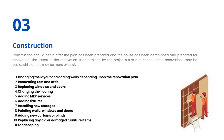Construction should begin after the plan has been prepared and the house has been demolished and prepared for renovation. The extent of the renovation is determined by the project's size and scope. Some renovations may be basic, while others may be more extensive. Home renovation construction checklist: Number 1 — Changing the layout and adding walls depending upon the renovation plan. Number 2 — Renovating roof and attic. Number 3 — Replacing windows and doors. Number 4 — Changing the flooring. Number 5 — Adding MEP services. Number 6 — Adding fixtures. Number 7 — Installing new storages.